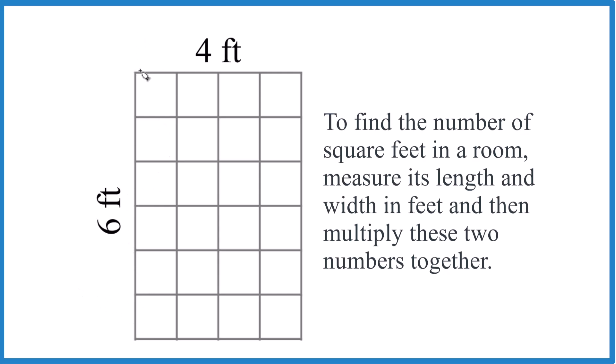So each one of these here, this is one foot here, this is one foot. So this right here, that's one square foot. If you counted all of these squares up, you get 24 squares or 24 square feet.